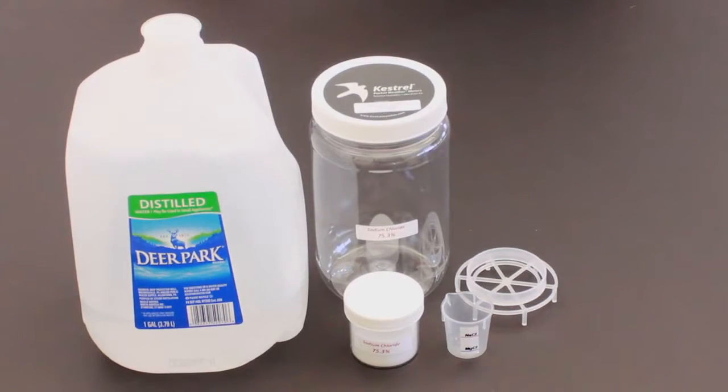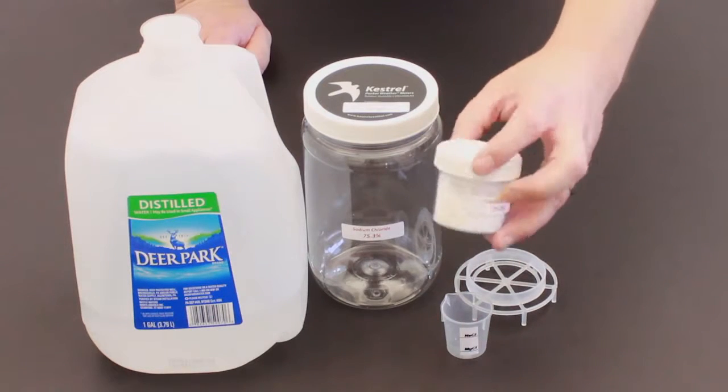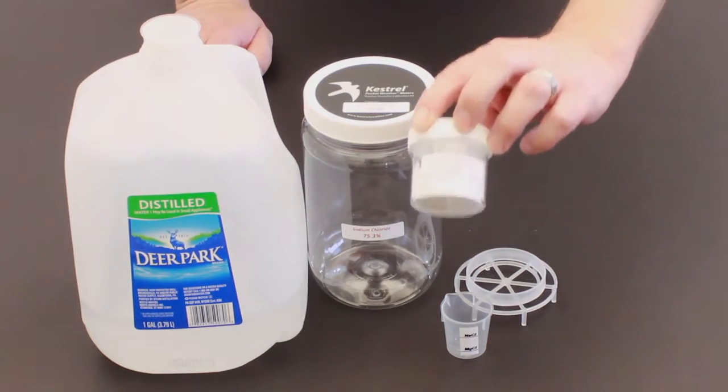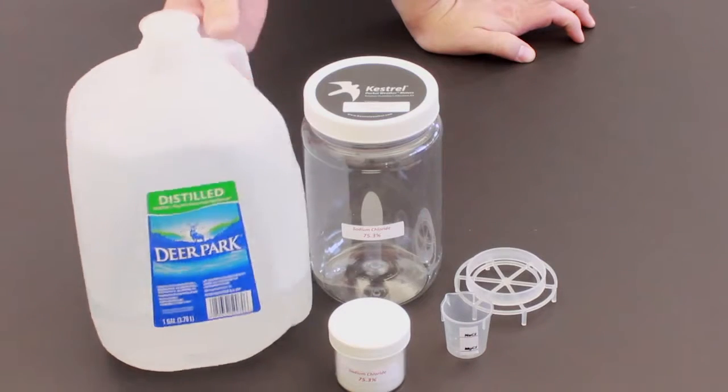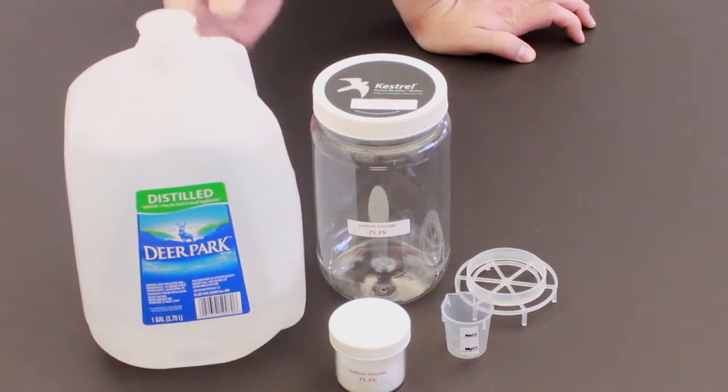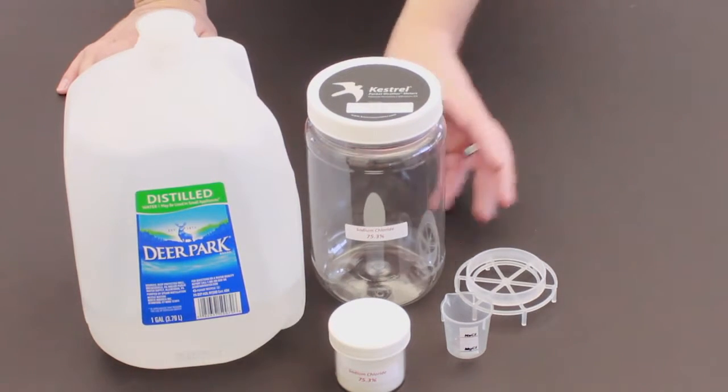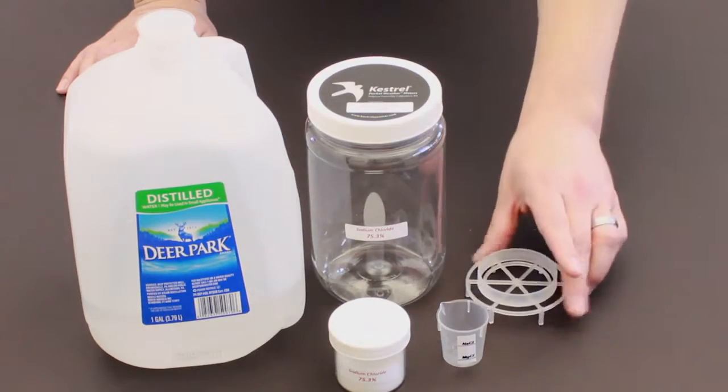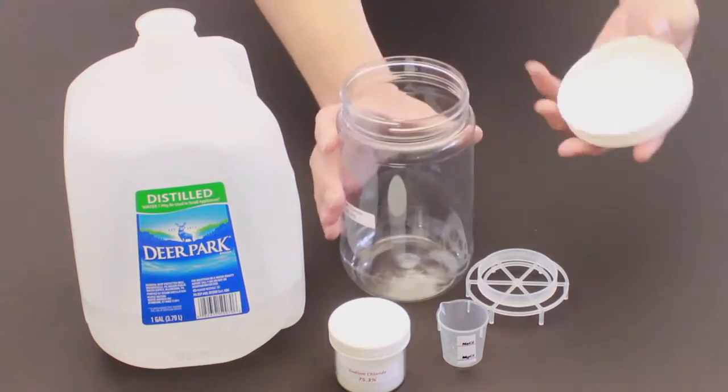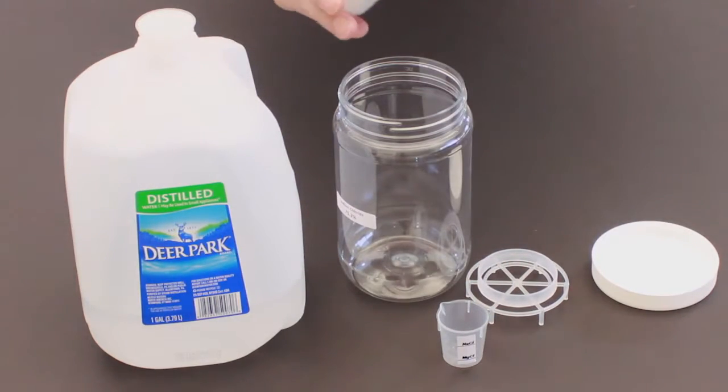The first step is to prepare the salts for the humidity calibration. We'll start with the sodium chloride. Please note that this is laboratory grade salts, not the same salts you get at a grocery store, so please don't attempt this without laboratory grade salts. Once we pull everything out, including the spacer grid, we're going to open up the container for sodium chloride marked red, and dump everything into the container.